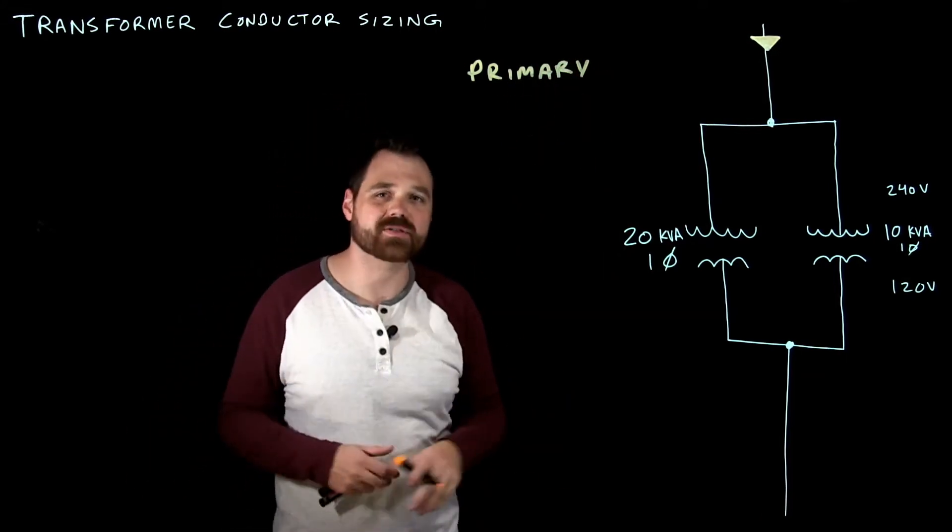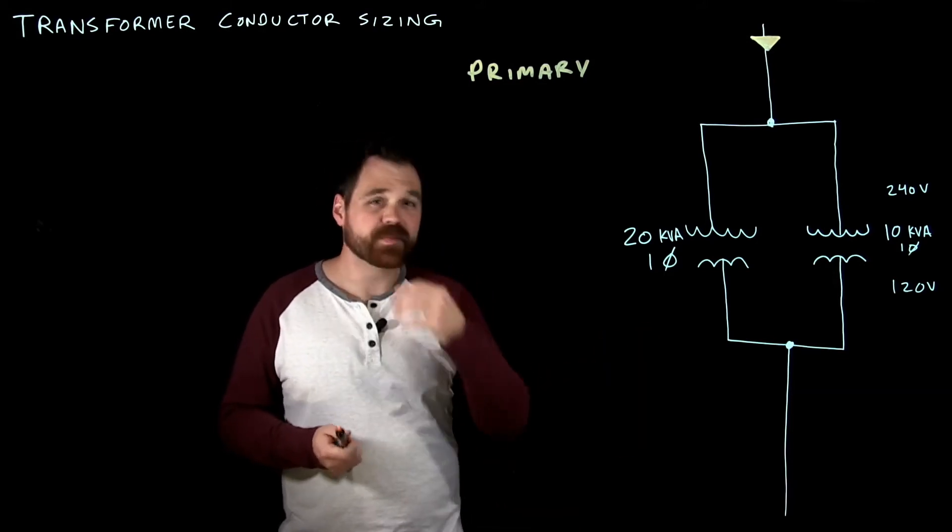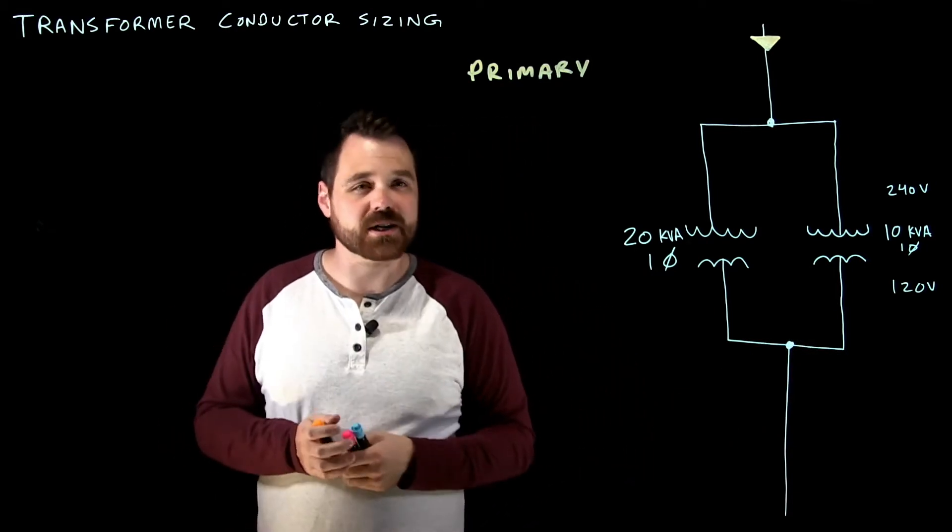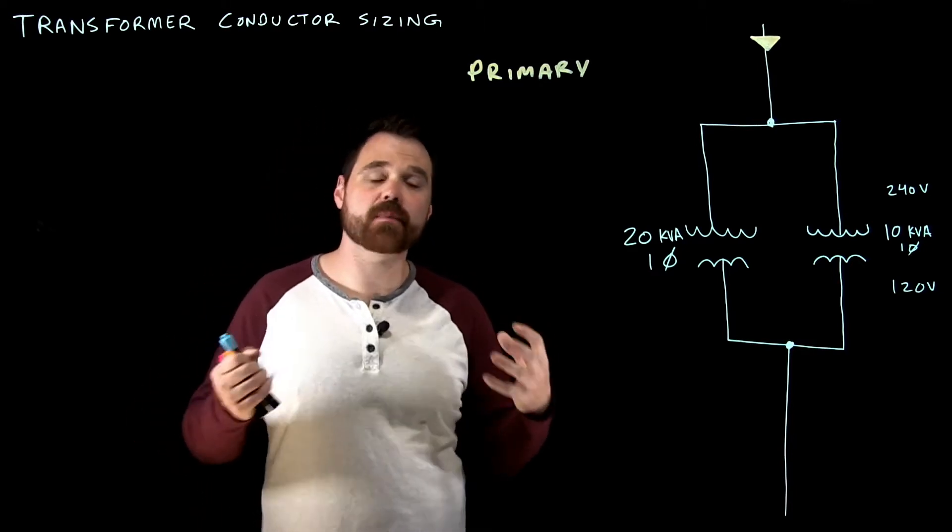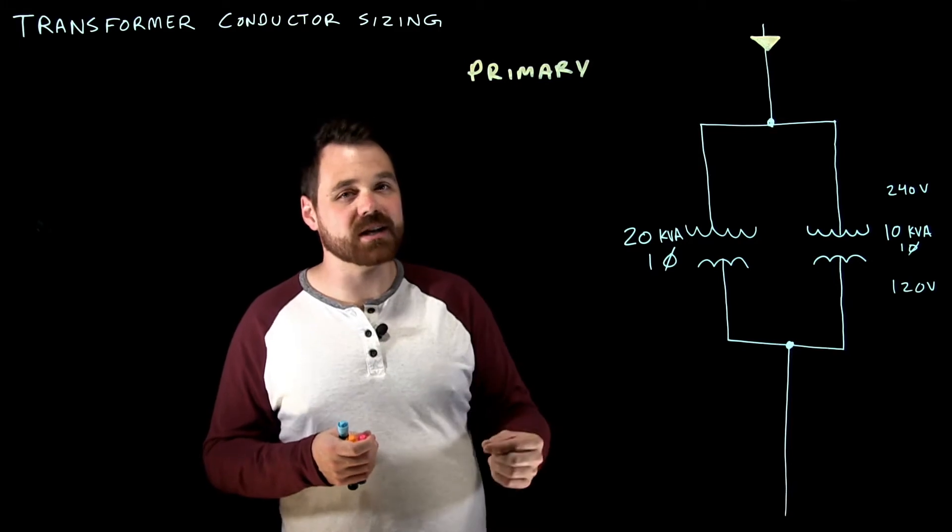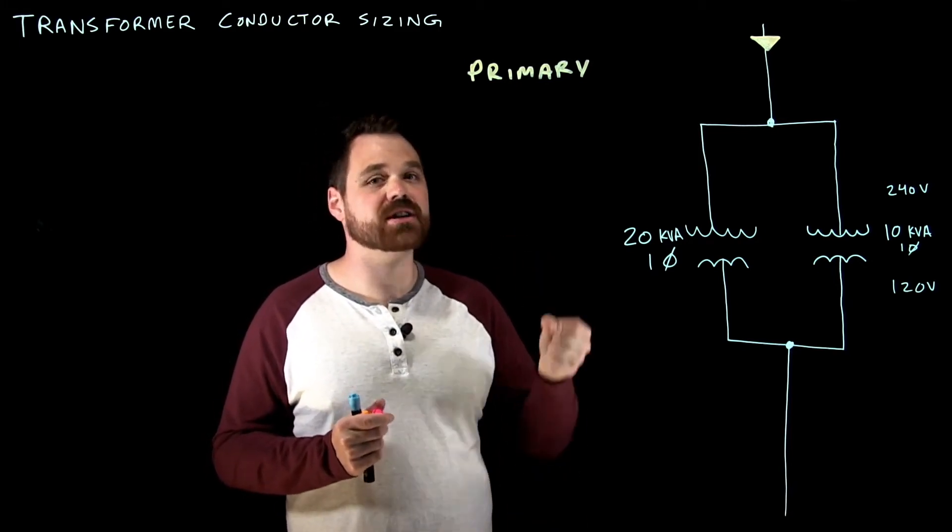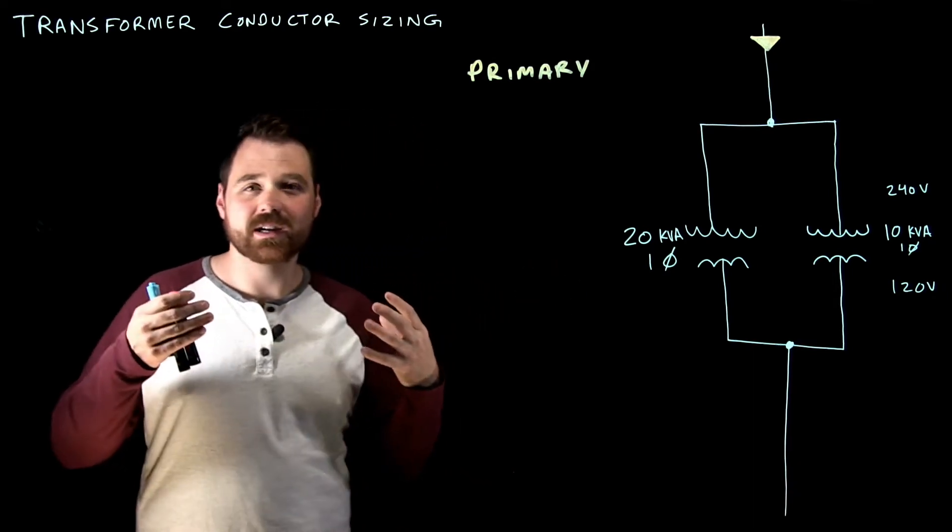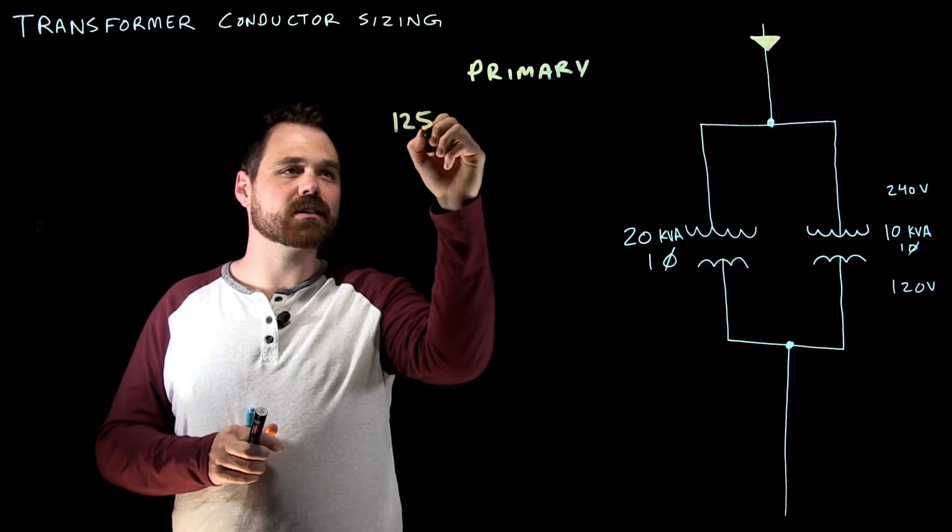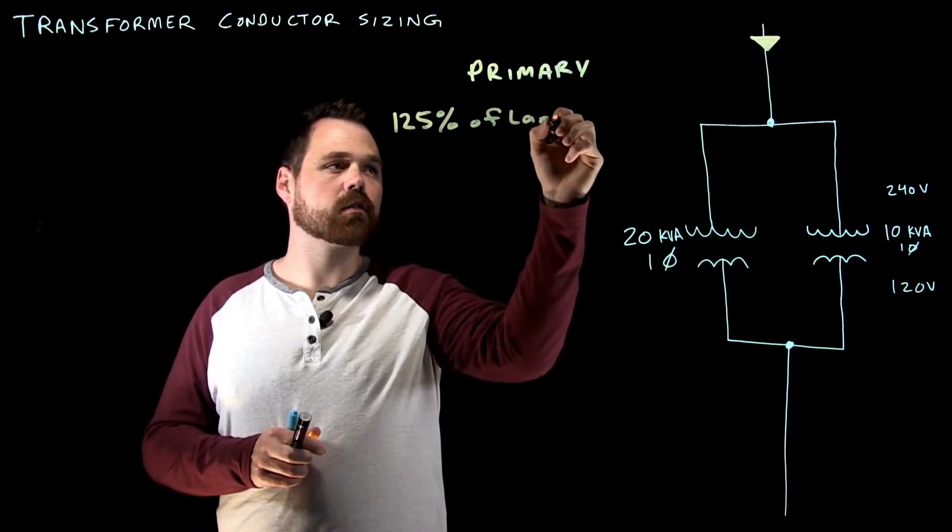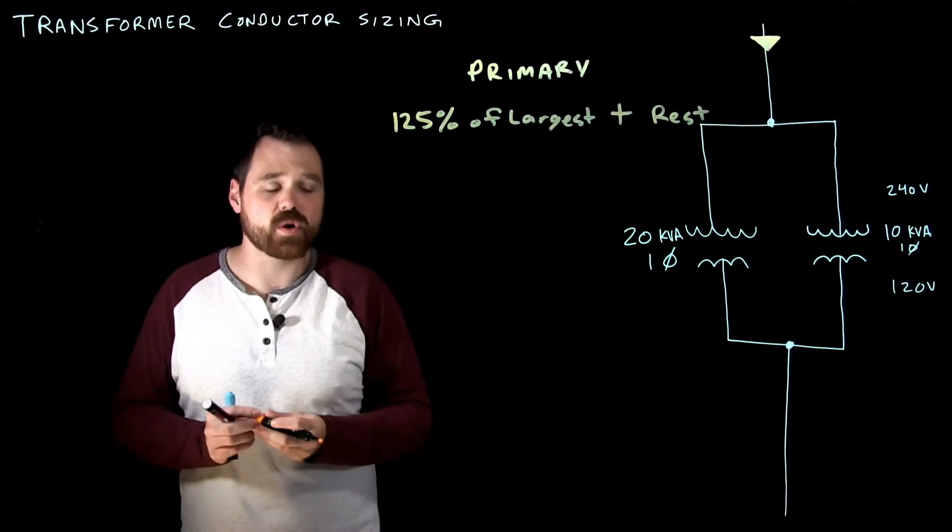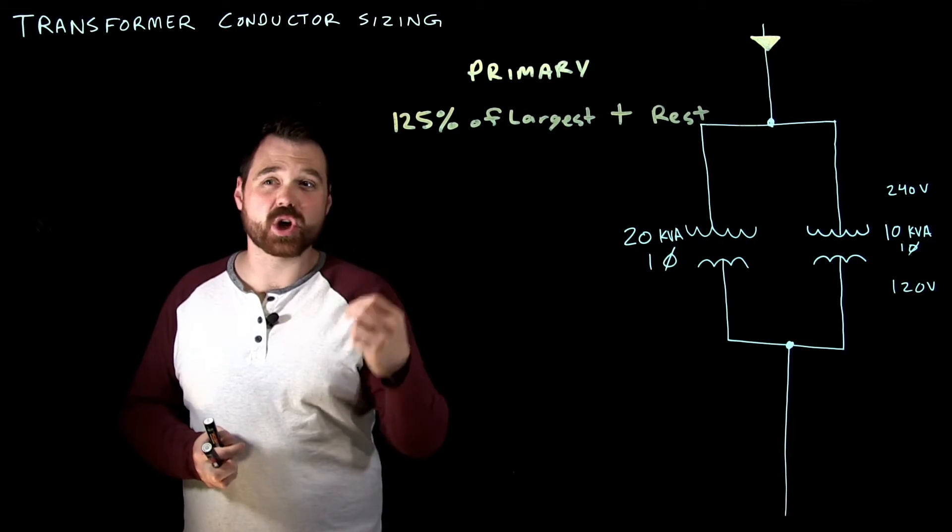Primary, so we're talking about sizing that bank of transformers. So what we're going to do is we're going to take a look in the rule, you'll notice now we're dealing with single phase transformers. So that's going to change our calculation a little bit. But what the rule tells me is when I'm feeding a bank of transformers, for the primary, it says the sum of all of the rated currents of the transformer, plus an additional 25% of the largest transformer. So I like to put that into one rule. And the way I read that rule or think about that rule, the way I do that calculation is I'm going to go 125% of the largest, plus the rest of them, or plus the remainder. Okay, so this is all based upon the rated current of the transformer.